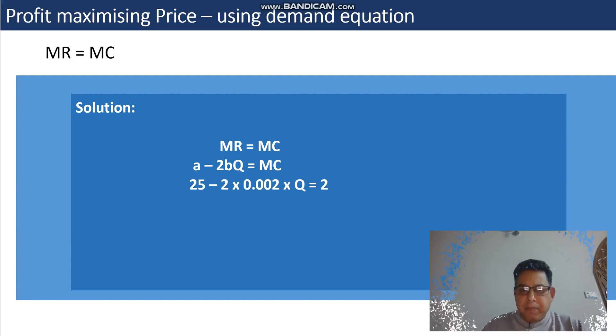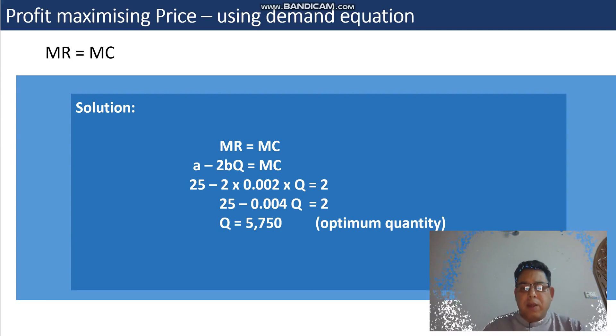Once we have this information banked into MR = MC, now all we need to do is rearrange the equation: 25 - 2 times 0.002 becomes 0.004Q = 2. Then we will move 25 to the other side of the equation and we'll get Q = 5,750. This is considered the optimum quantity or the most suitable quantity under the circumstances.